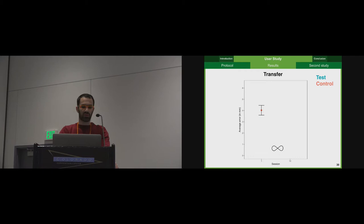So now this is the result for the transfer task. This is the pre-test for the control group on the infinity shape before the training on the ellipse. And this is the post-test after the training on the ellipse. So there is a significant progress, meaning that some of what was learned during the training on the ellipse can be transferred to better perform the tracking on the infinity shape.